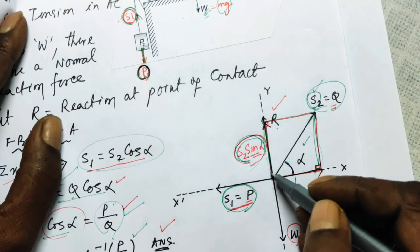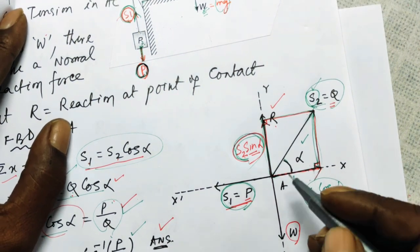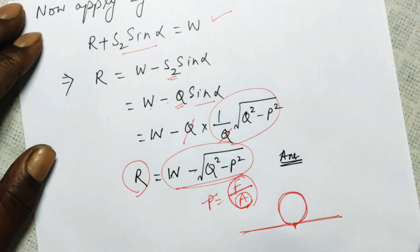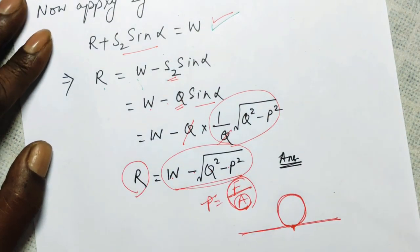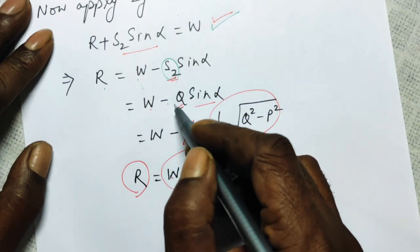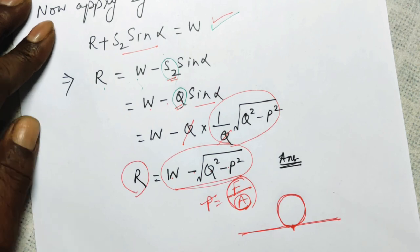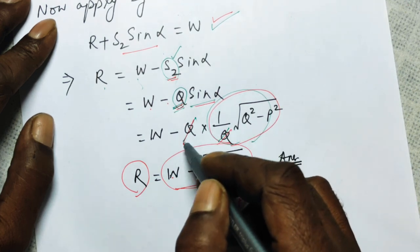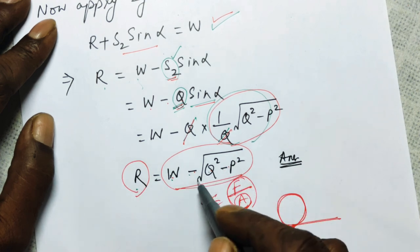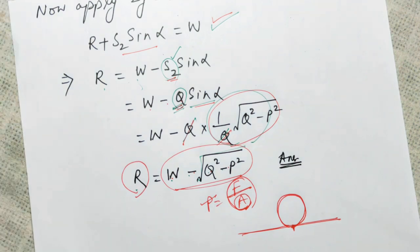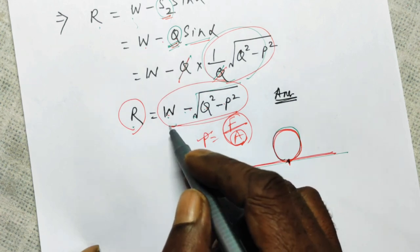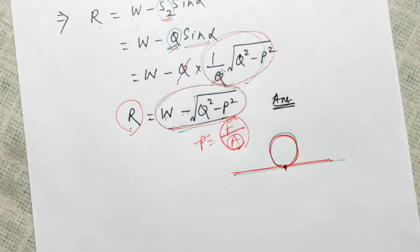Applying sigma Y equals zero: the reaction force R points upward, S2 sin alpha also points upward, and these are opposed by W. So W equals R plus S2 sin alpha, giving R equals W minus S2 sin alpha. Since S2 equals Q and sin alpha equals (1/Q)√(Q² − P²), substituting gives Q times (1/Q)√(Q² − P²), so Q cancels and R equals W minus the square root of Q² minus P². The question asks for pressure — since the ball contacts the plane at just a point, this normal force R is indeed the pressure.